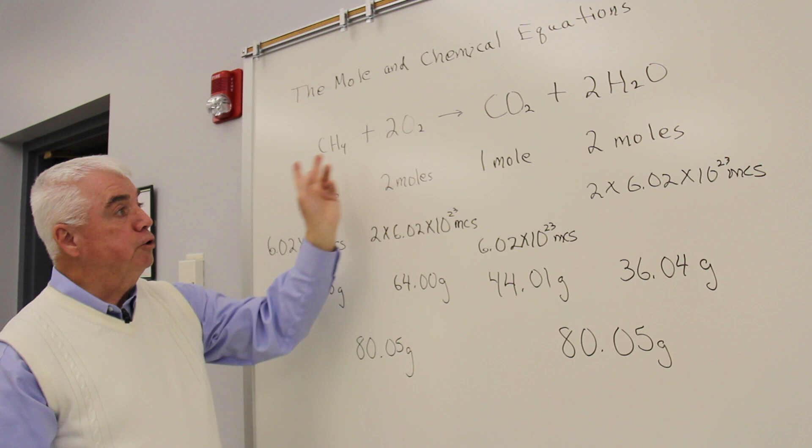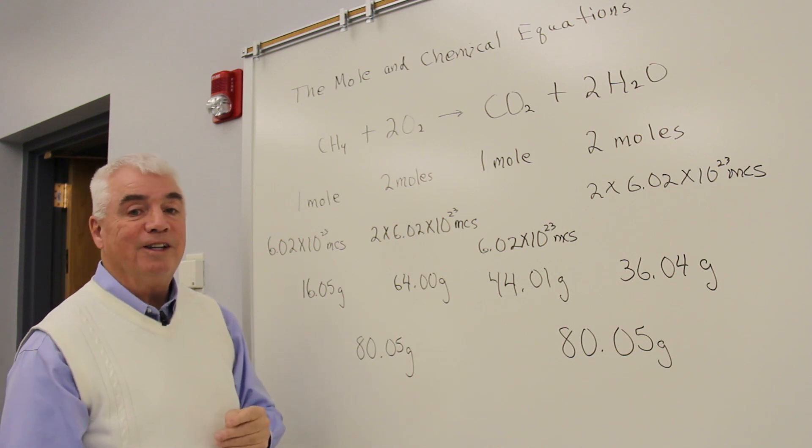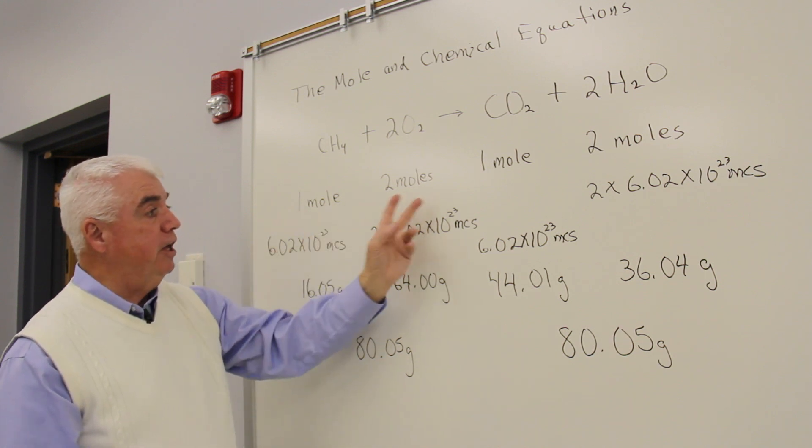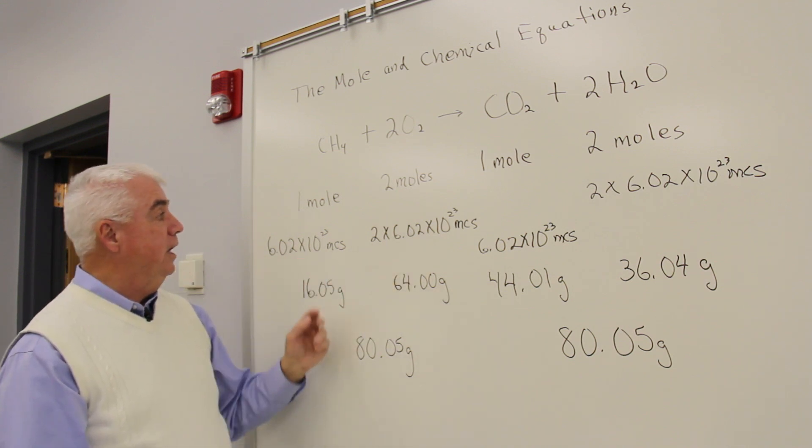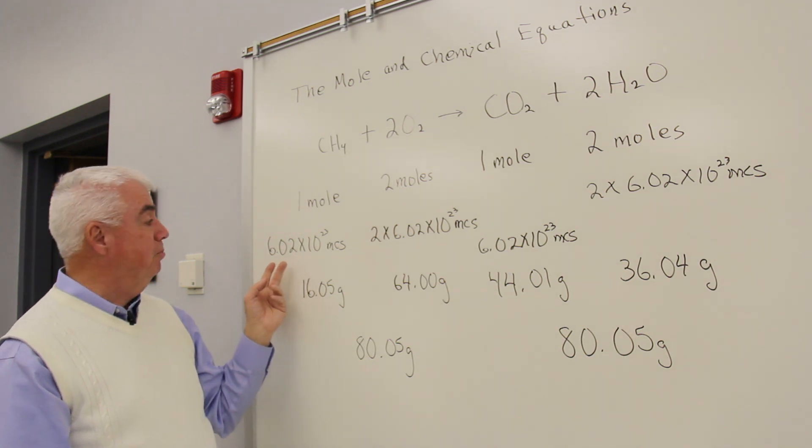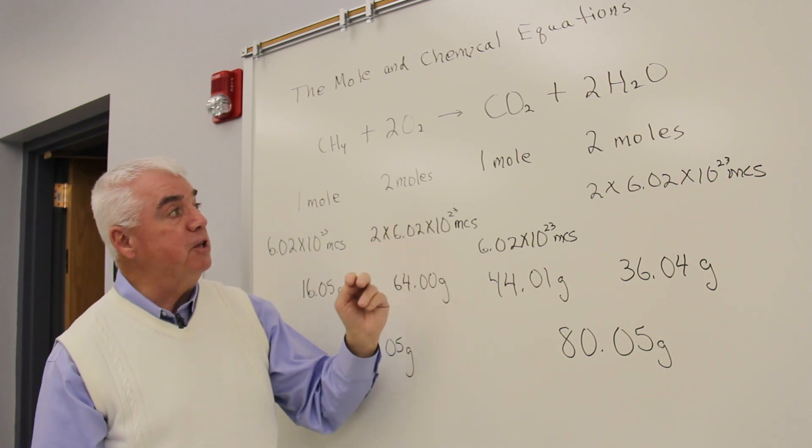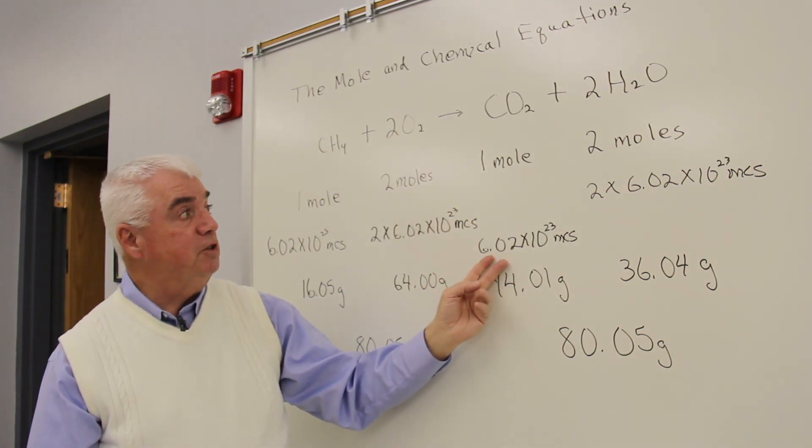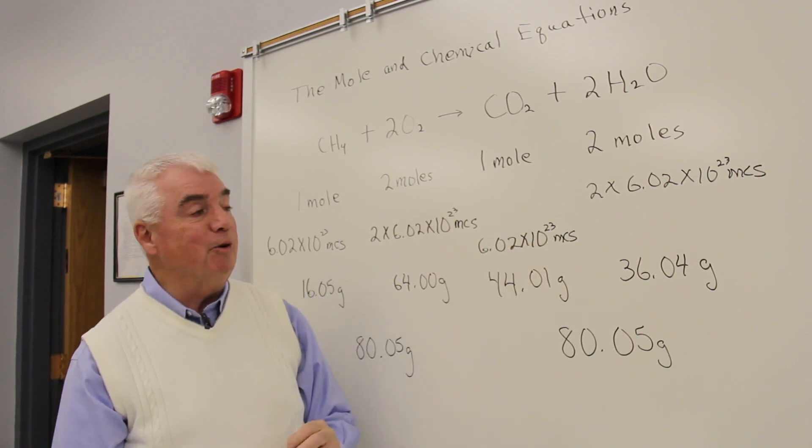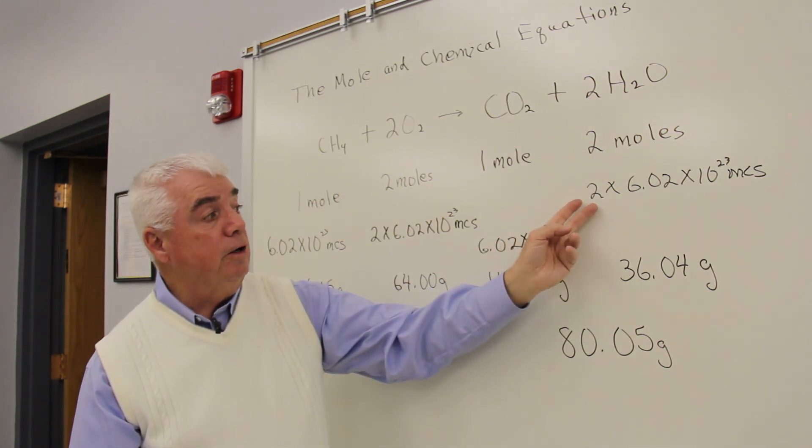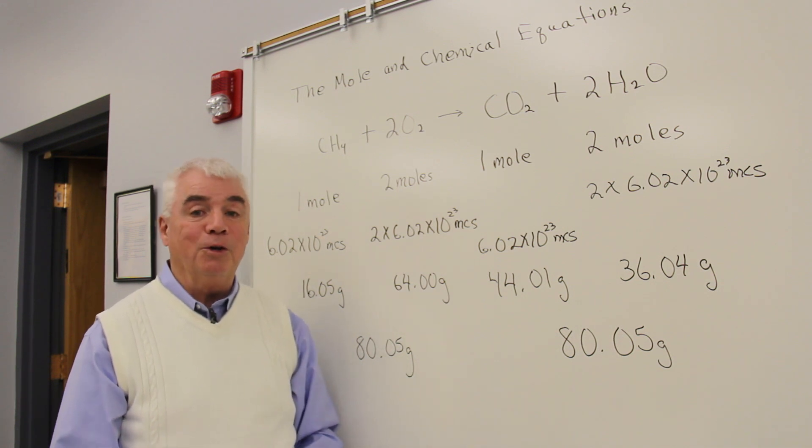Another way of interpreting this equation, we've in the past interconverted moles and molecules. Let's interpret the equation on the mole scale but in terms of molecules. One mole we know is Avogadro's number, 6.02 times 10 to the 23rd. Two moles would be two times that, to give one mole of CO2, 6.02 times 10 to the 23rd. MCS is my abbreviation for molecules. And over here, two moles, two times 6.02 times 10 to the 23rd molecules of water.